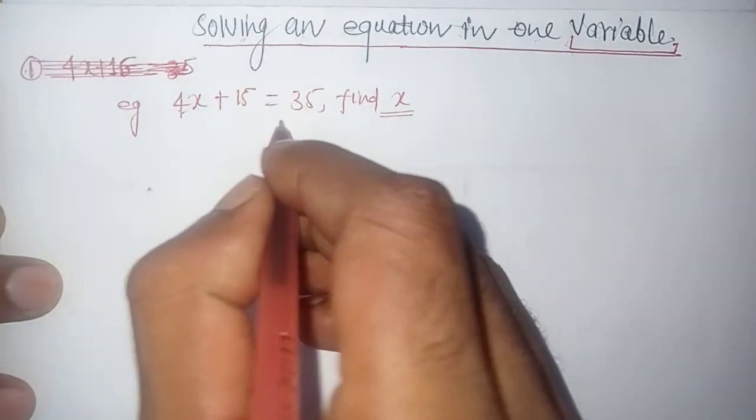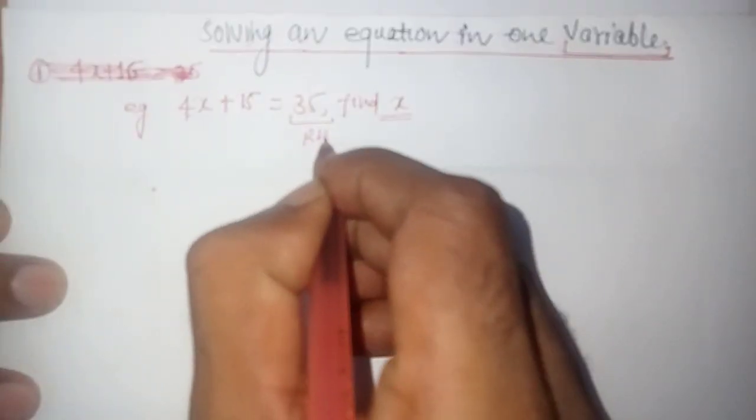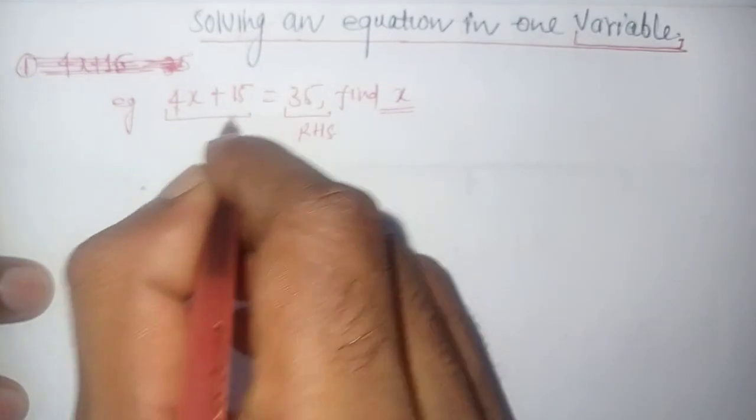What is your right hand side? It is called RHS. And this is called the left hand side, LHS.